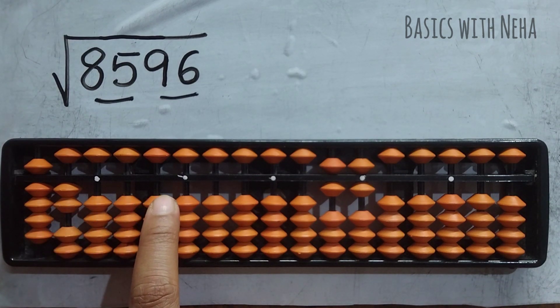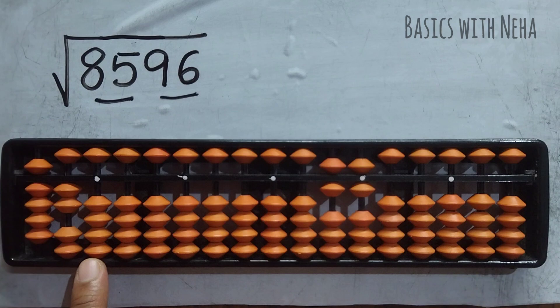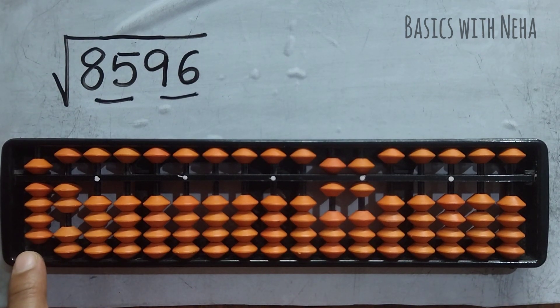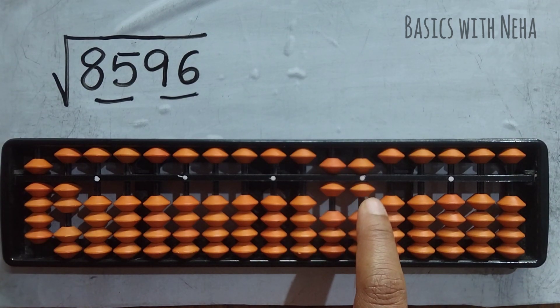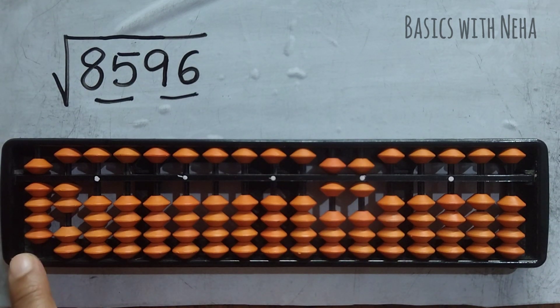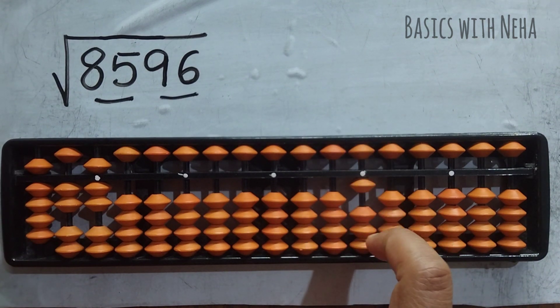After that, whatever answers I get will be in decimal places. Now I have to do it here. 9 when multiplied with something, I'm going to get this number, that is 66 or near to that. So 9, 7 squared is 63. I'll remove 6 and 3.